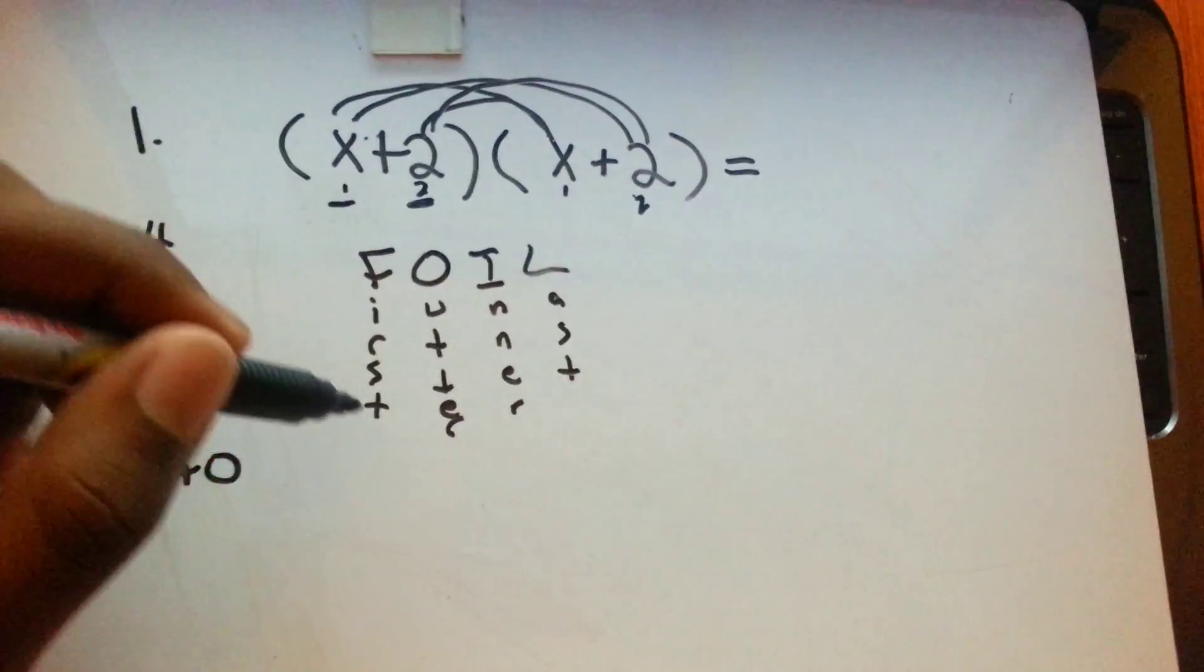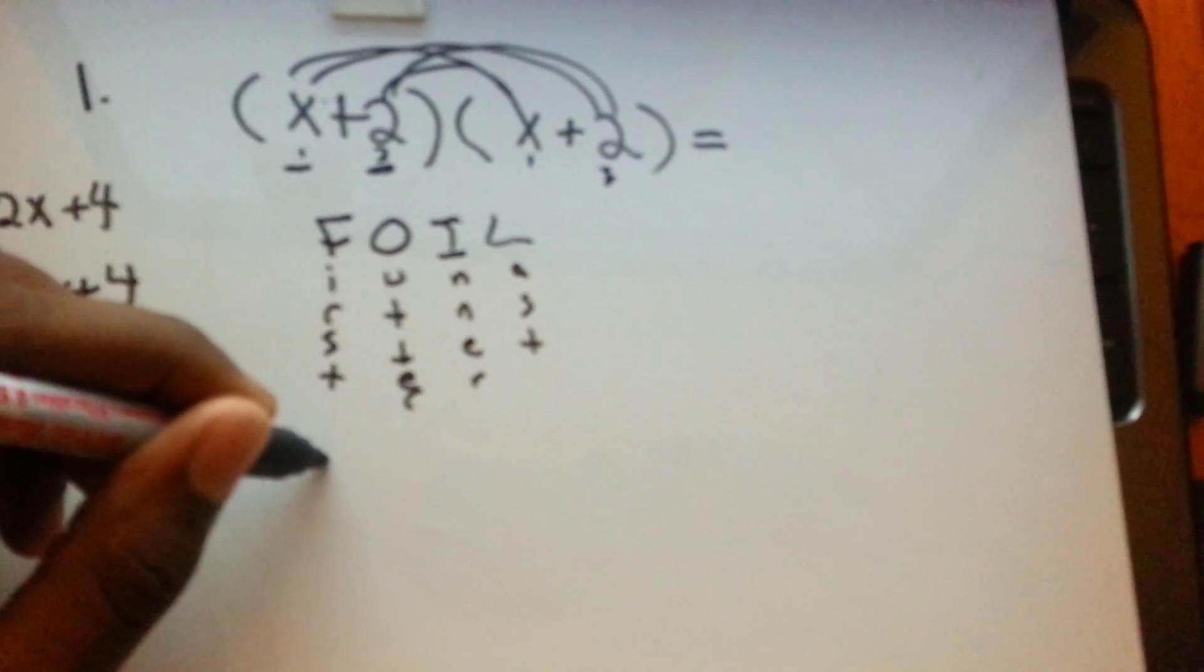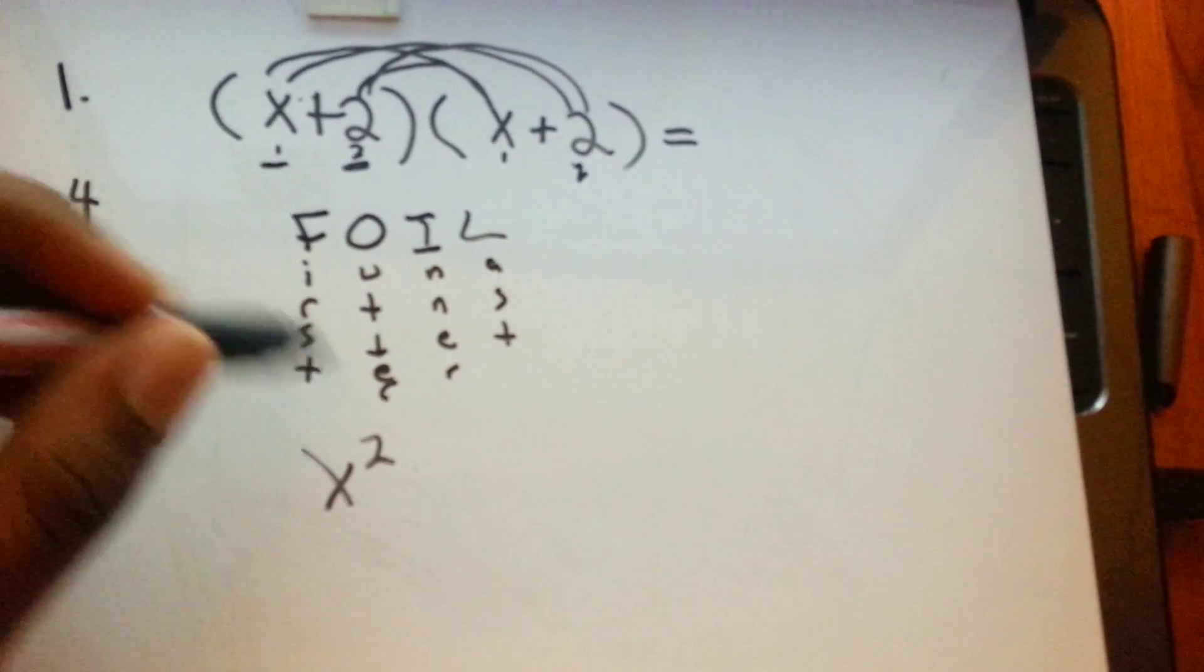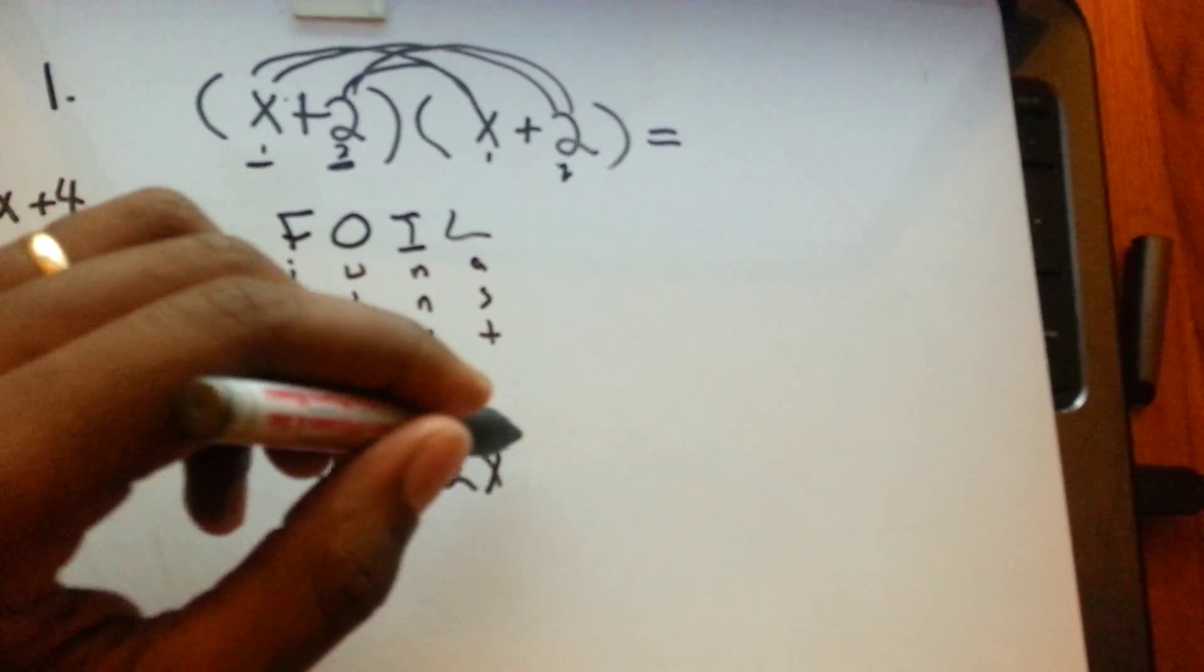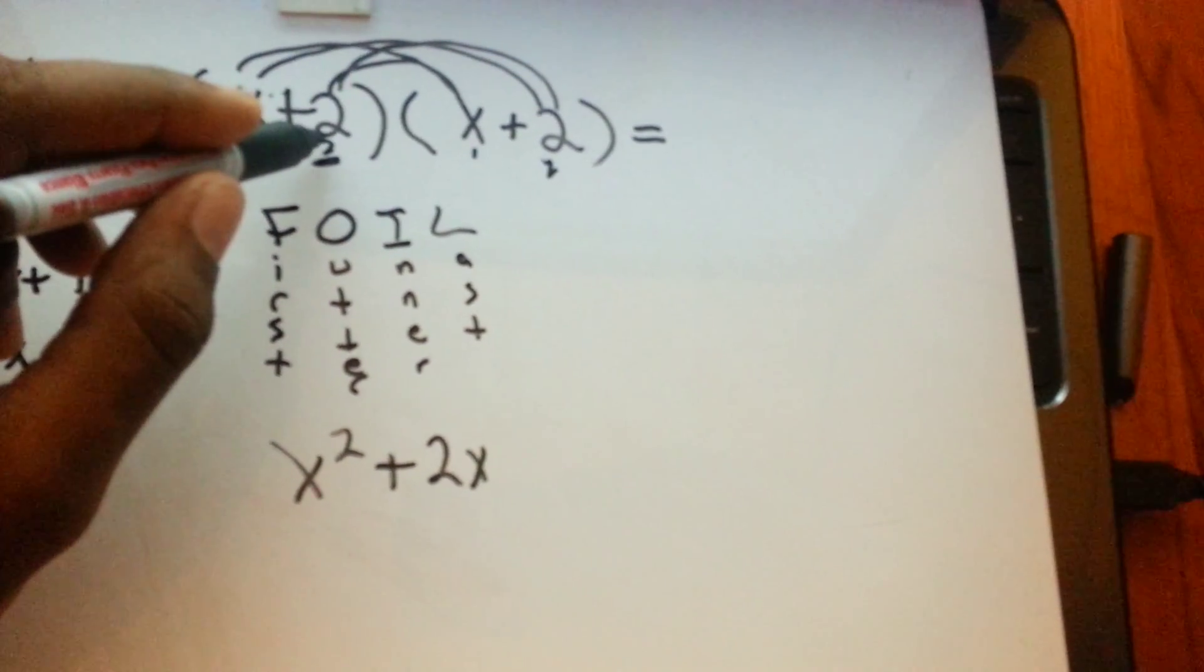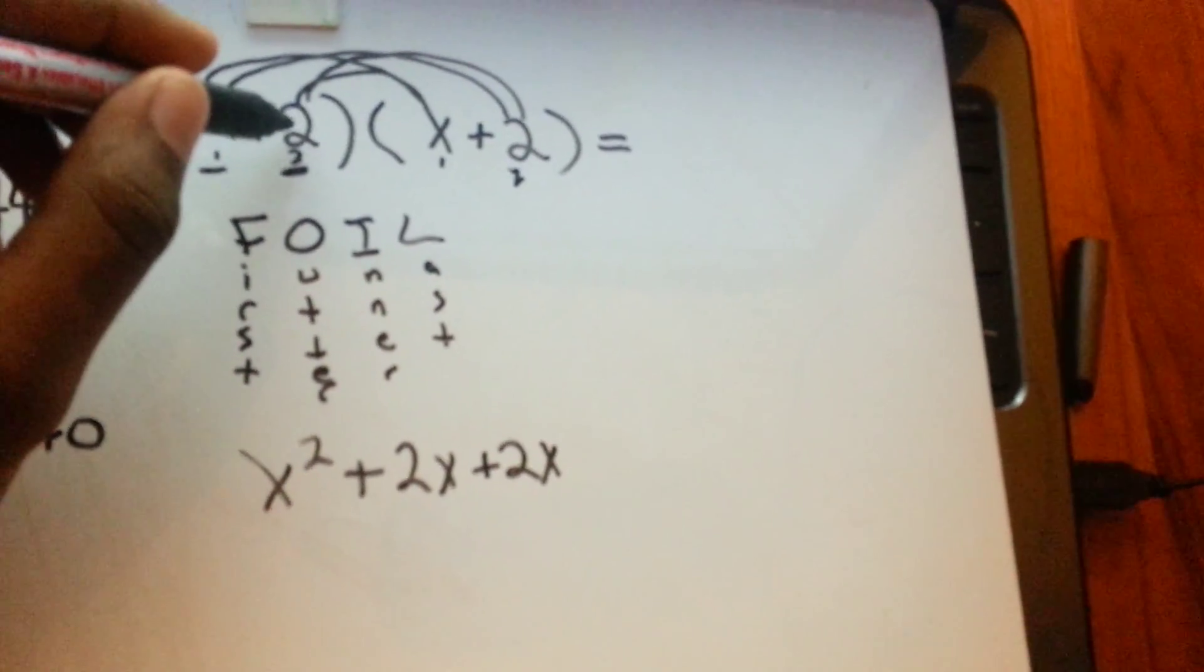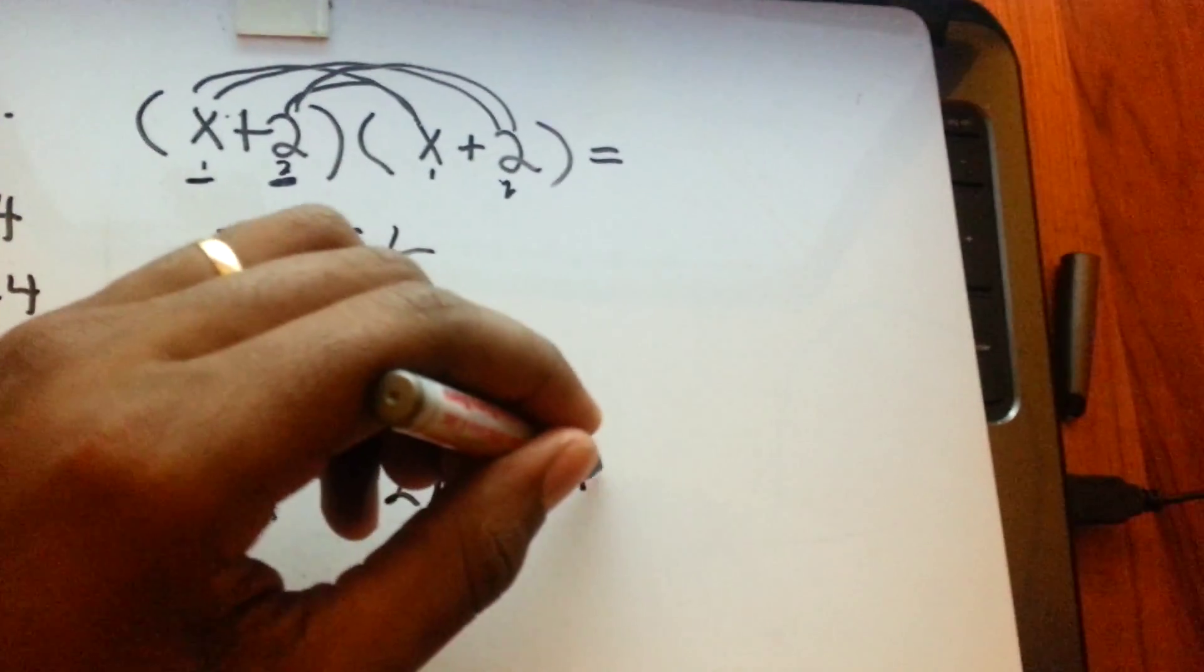So the first step, you multiply x times x equals x squared. Next is Outer, x times positive 2 equals positive 2x. Next is Inner, positive 2 times positive x equals positive 2x. And last is last. Positive 2 times positive 2 equals positive 4.